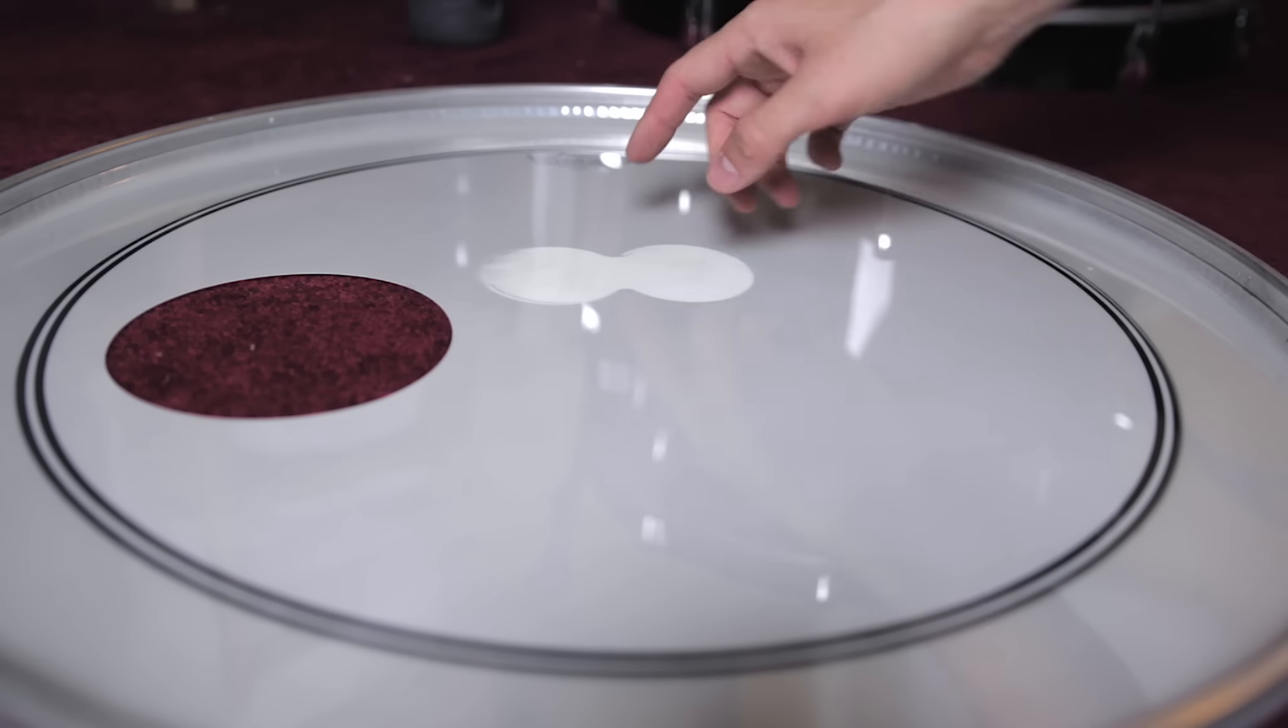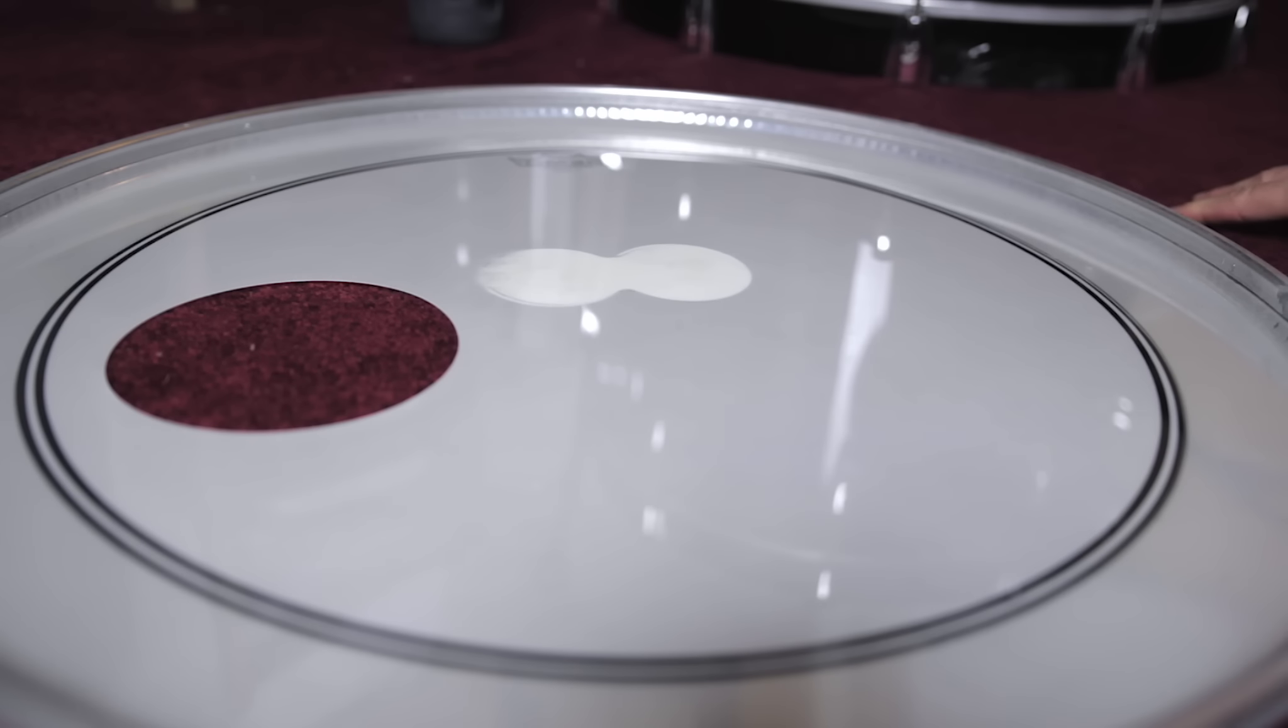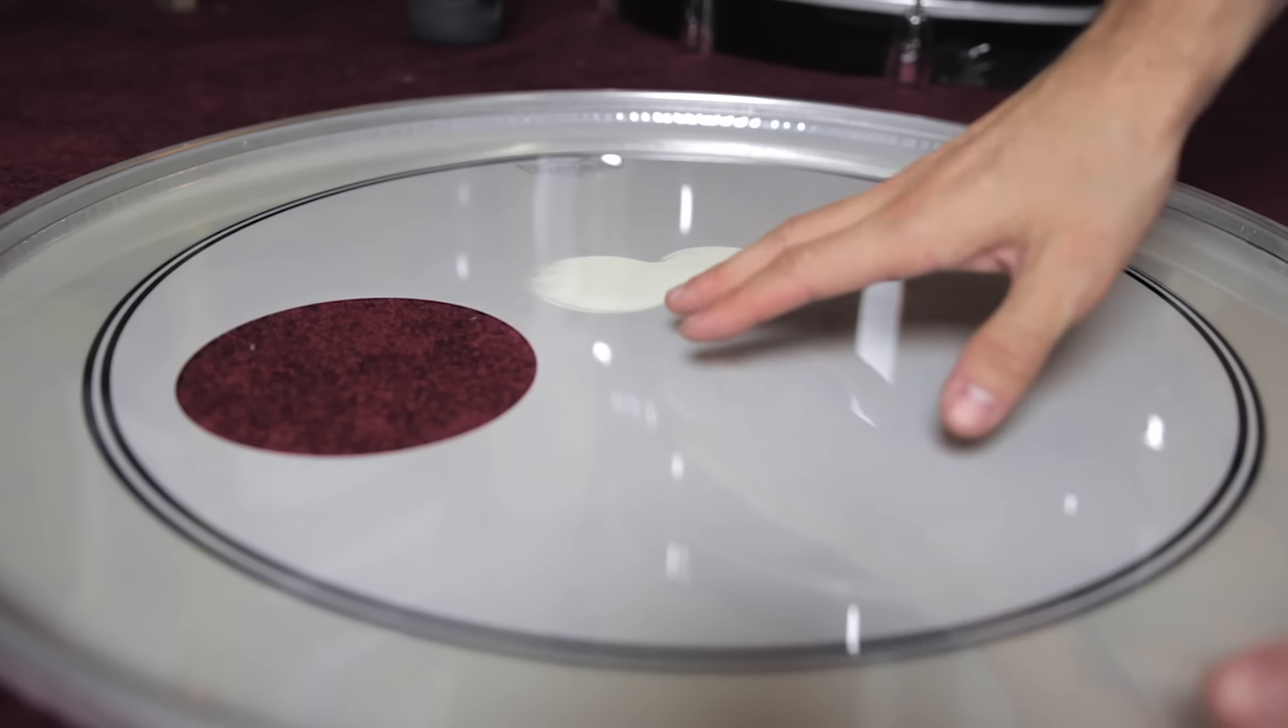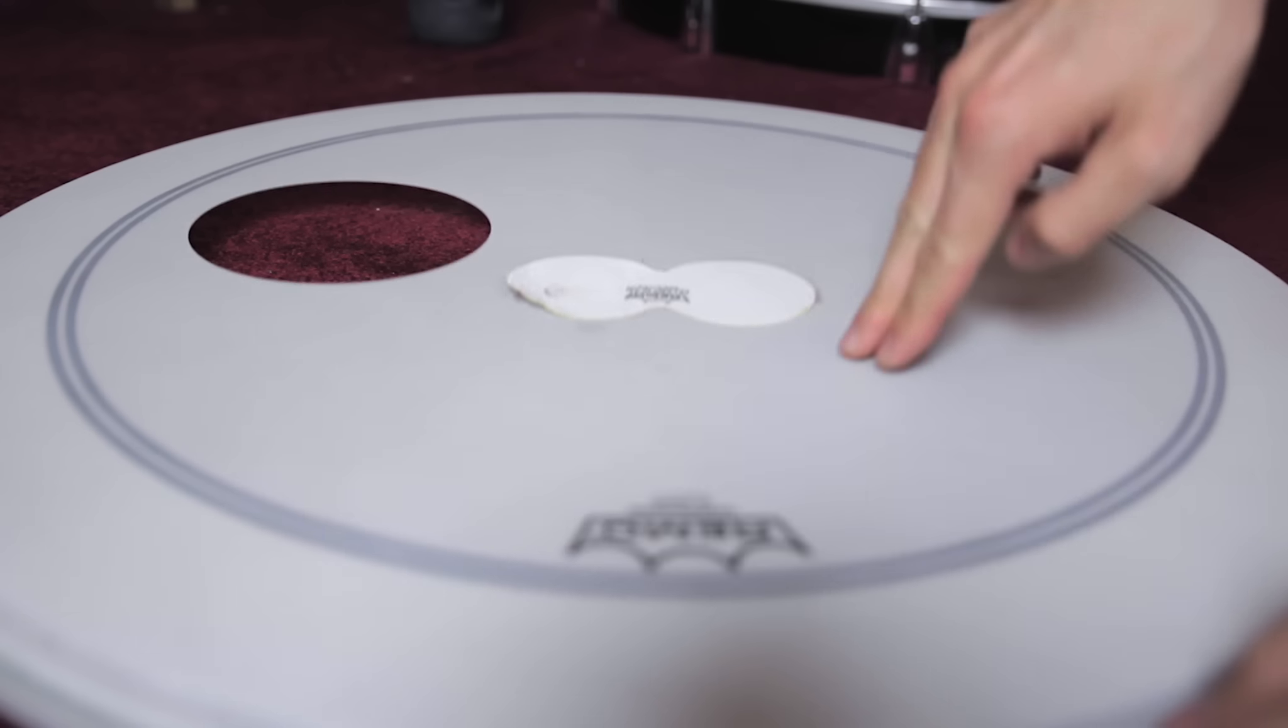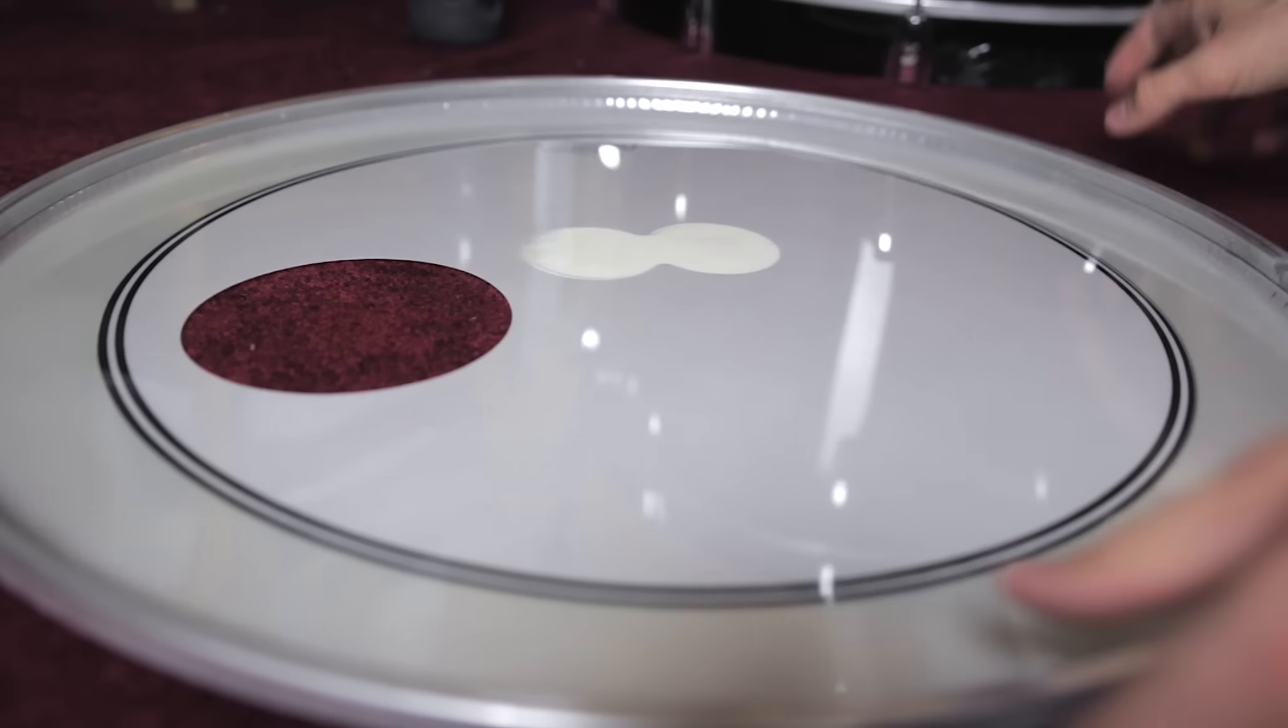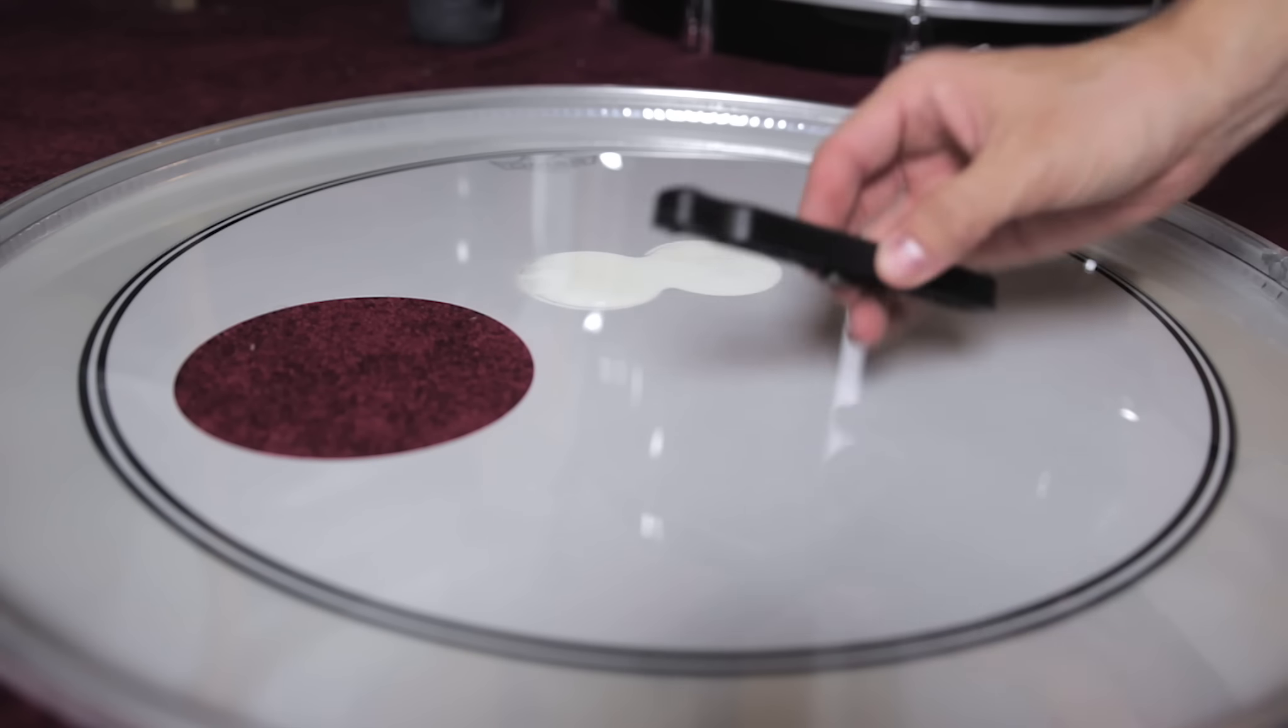I'm going to demonstrate it on this head here. This is an older Remo PowerStroke 3 that I was about to throw out, but I'll just use this for demonstration purposes. I would recommend laying it face first so that this is flat. If you do it like this, it's going to have a lot of give in it. Put it like this so it's on a flat surface.